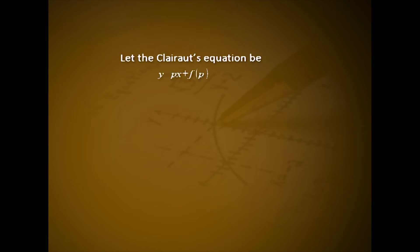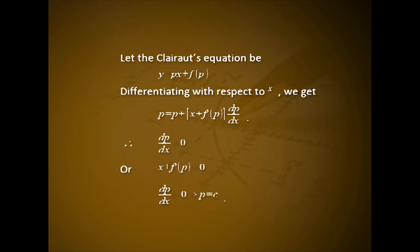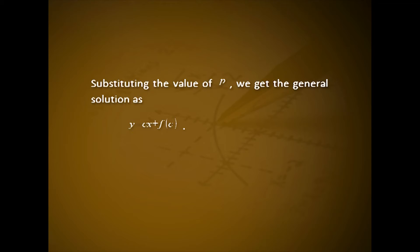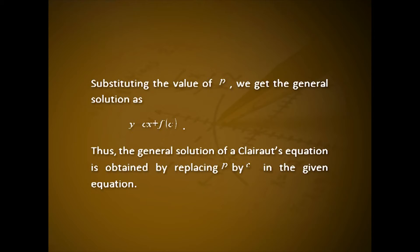To solve Clairaut's equation y = px + f(p): differentiating with respect to x gives p = p + x·f'(p)·(dp/dx), so either dp/dx = 0 or x + f'(p) = 0. From dp/dx = 0, p = c, giving the general solution y = cx + f(c) — obtained by simply replacing p with c in the given equation. If we eliminate p between y = px + f(p) and x + f'(p) = 0, we get a singular solution containing no arbitrary constant, which cannot be obtained as a particular case of the general solution.